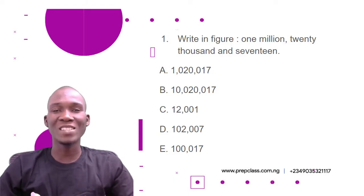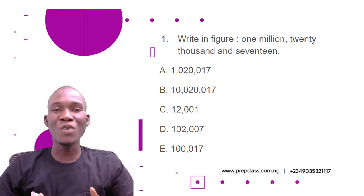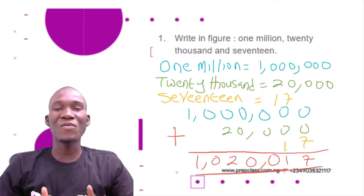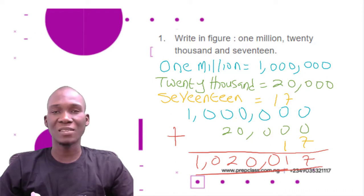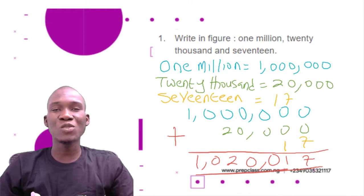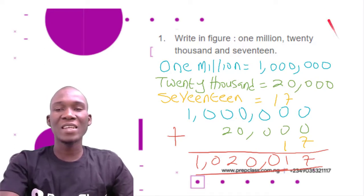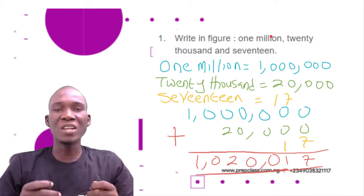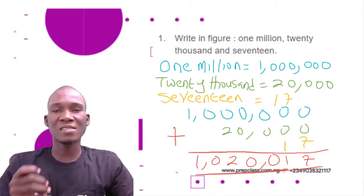Now which one of these is going to be the right answer? The only way we can find out is to solve. We have the question: write in figures 'one million twenty thousand and seventeen.' We have to start by breaking each word into a figure. The first word we have here is 'one million.' Now remember, million has six zeros.